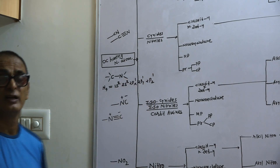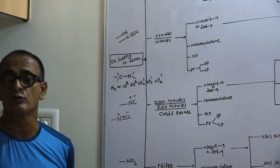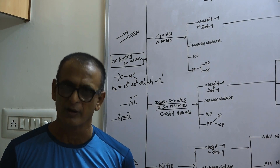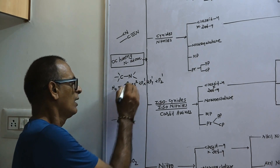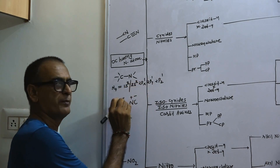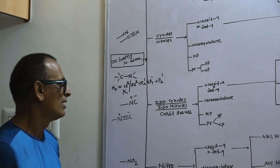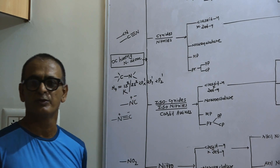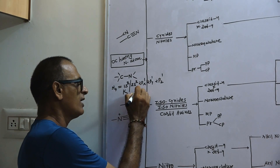The electronic configuration is of maximum importance to explain both the physical and chemical properties of any organic compound. In the case of nitrogen, the 1s orbital belongs to the K-orbit and all the 2s, 2px, 2py, 2pz orbitals belong to the L-orbit.